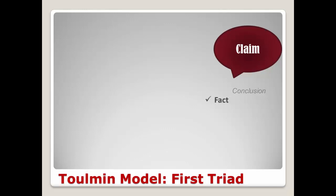There are three basic types of claims. Fact, which focus on phenomena — things that can be empirically verified. Values, which are claims that you make involving opinions, attitudes, and subjective evaluations of things. Some people call these judgments. And policy — claims you make promoting an action that you think should occur.